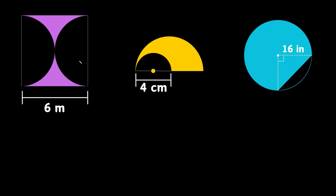Let's start with this first problem on the left. This shape looks like a square. It gives us one dimension — 6 meters down here — so we can assume the rest of the lengths are also 6 meters. We have two semi-circles that are cut out, so how would we find the area of the shaded purple region?